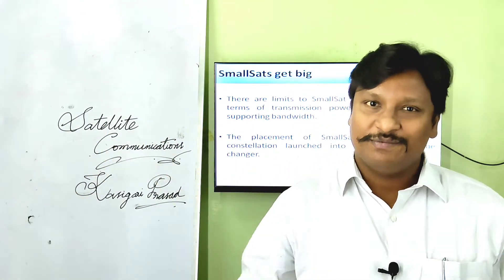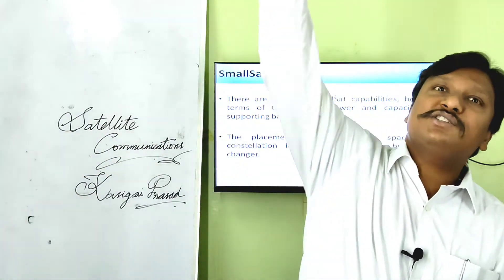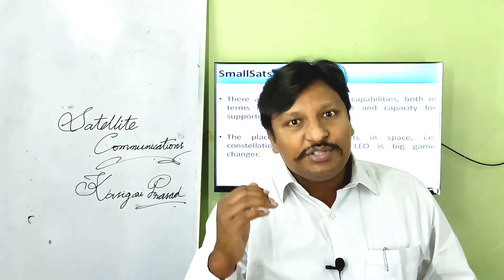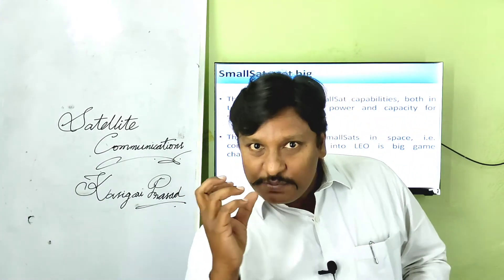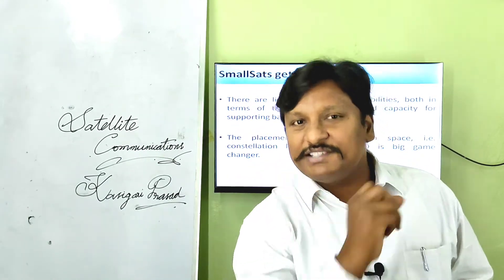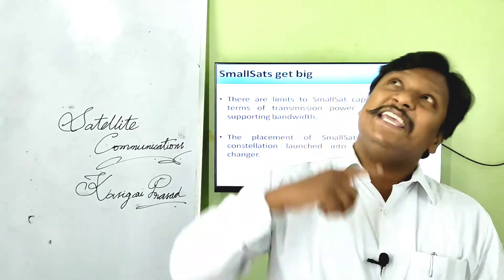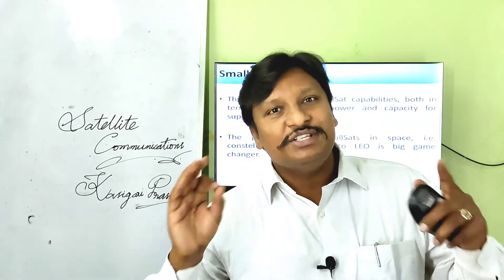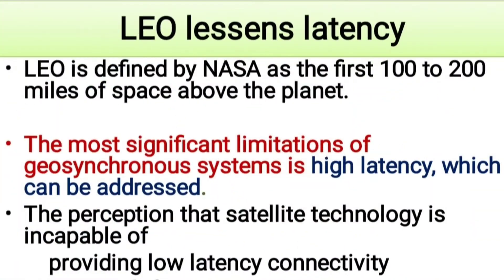Instead of sending satellites into greater heights like GEO orbits, if we use low Earth orbit with small nano satellites to provide equal services, that is a great game changer in satellite communications. Low Earth orbit lessens latency. LEO is defined by NASA as the first 100 to 200 miles of space above the planet.